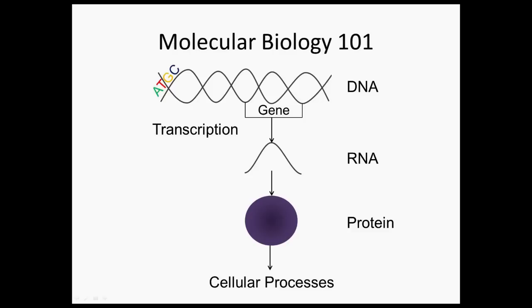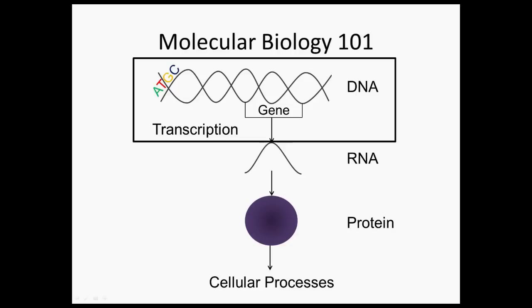Before I go into the details of the project I need to tell you a little bit about molecular biology. Every cell in your body has identical DNA, and this DNA consists of four bases: A, T, G, and C. Within DNA there are regions called genes. These regions are used as a template for creating RNA in a process called transcription. RNA is then used as a template to make proteins, which do most of the processes in your cell.